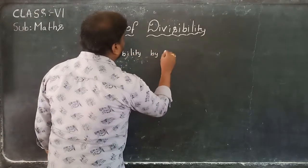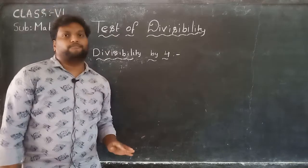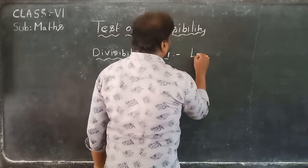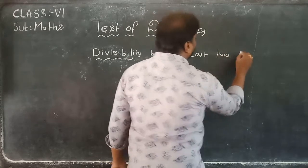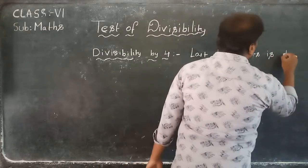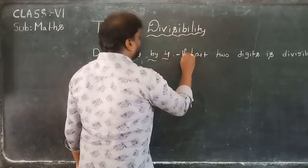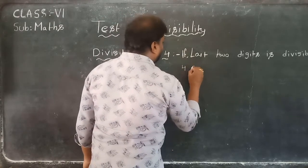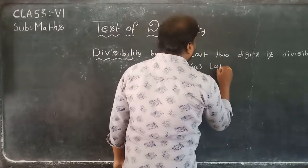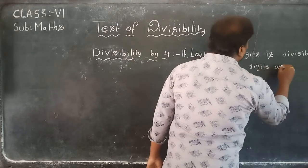Divisibility by 4. Divisibility by 4 means in the given number, the last two digits must be divisible by 4. If the last two digits are divisible by 4, or one more rule — the last two digits are zeros — then the whole number is divisible by 4.